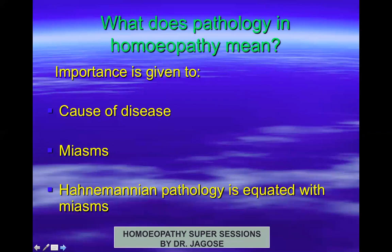If the correct remedy is given, all improvement takes place — knee movement is restored, inflammation subsides, soft tissue swelling subsides. You have reversed the phase from sycotic to psoric. If the case were irreversible and the syphilitic miasm predominant, the remedy can only alleviate suffering temporarily — you can only palliate. Hahnemannian pathology is equated with the miasms, and different pathologies correspond to different miasms.